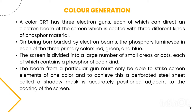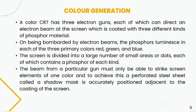Color generation. A color CRT has three electron guns, each of which can direct an electron beam at the screen, which is coated with three different kinds of phosphor material. On being bombarded by electron beams, the phosphor luminesces in each of the three primary colors: red, green, and blue. The screen is divided into a large number of small areas or dots, each of which contains a phosphor of each kind.